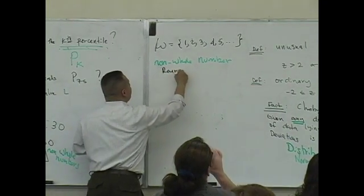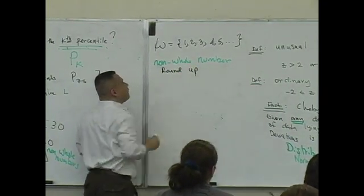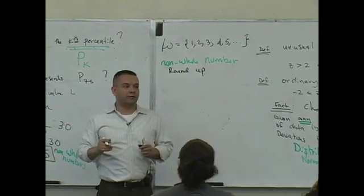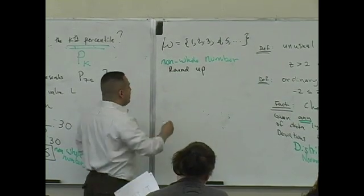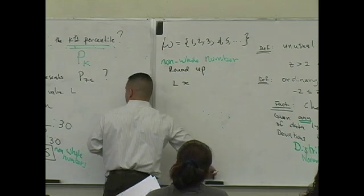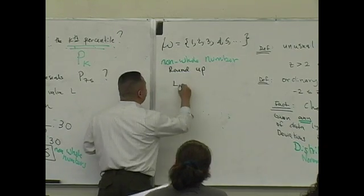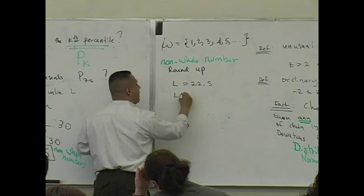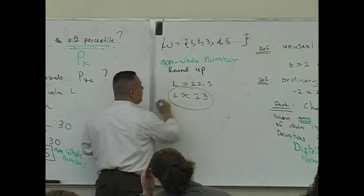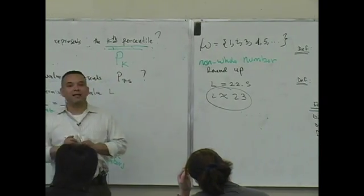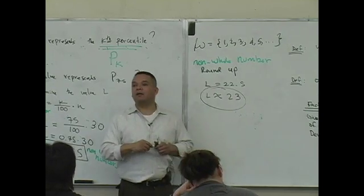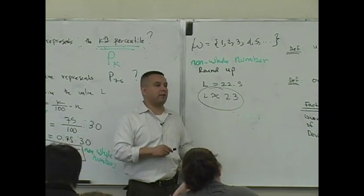What does round up mean? Round up is short for round up the value you have in L to the next whole number. So, this is L, which is approximately, or it's exactly 22.5. Now, L is rounded up, so it's about 20 what? 23. You guys okay with that? We did not round off, although rounding off would have given us the same answer. We rounded up.